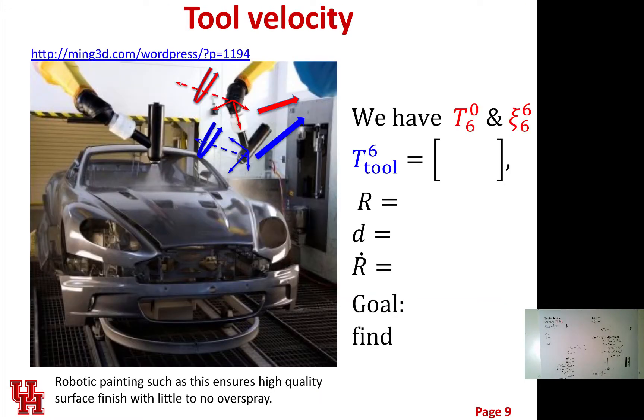The tool velocity. In here I have drawn a couple things that you need to know. We know T6 in frame zero. We know the psi six in frame six. This is how fast is my angular velocity of my tool, and this right here is the pose and the rotation matrix. What we really want to know is how fast is the tool moving.